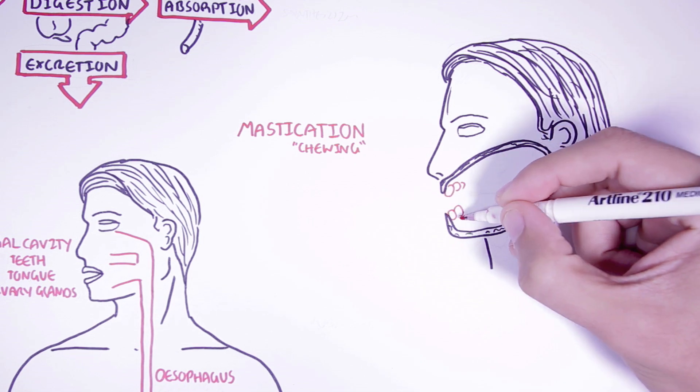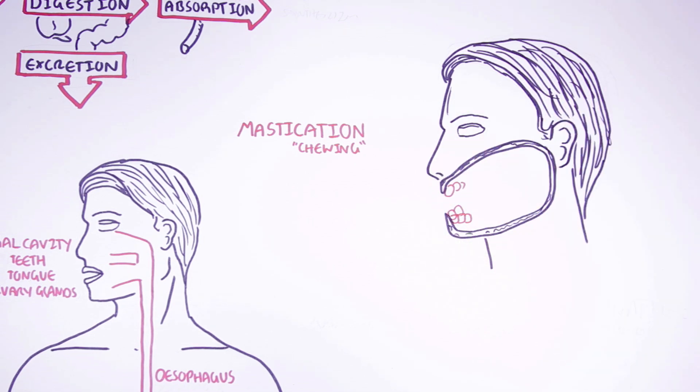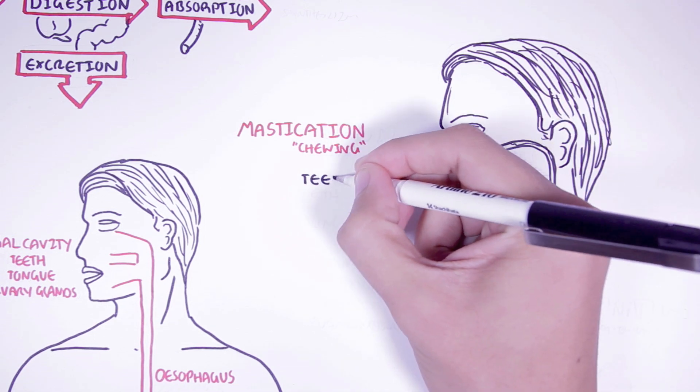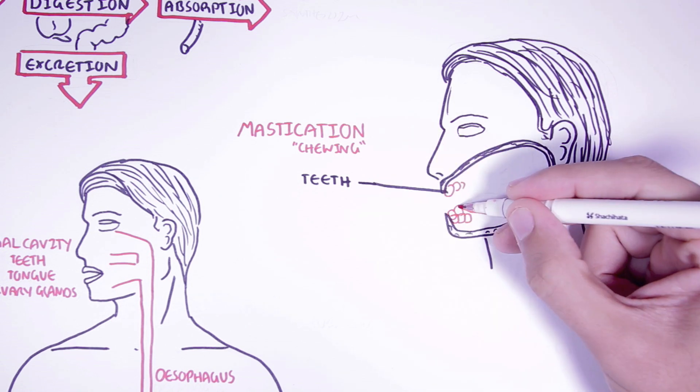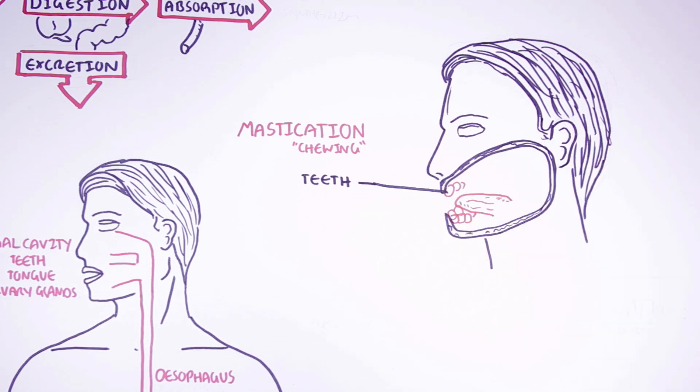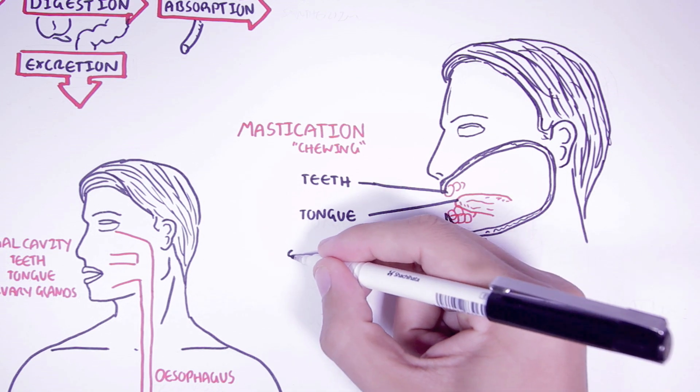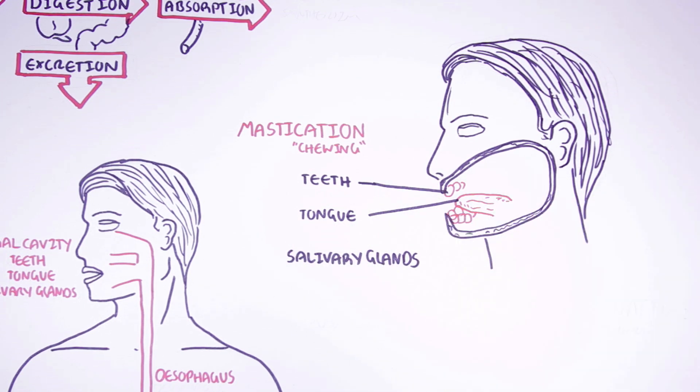Food will be broken down mechanically by the mouth, teeth playing a key role. The tongue plays a role in tasting the food as well as mixing the food around, while the salivary glands within the oral cavity secrete saliva, which lubricates the food.